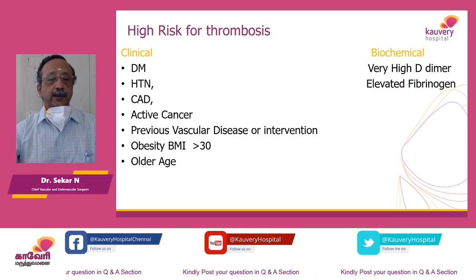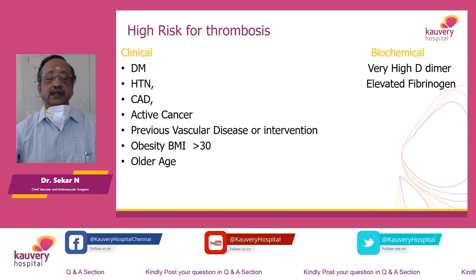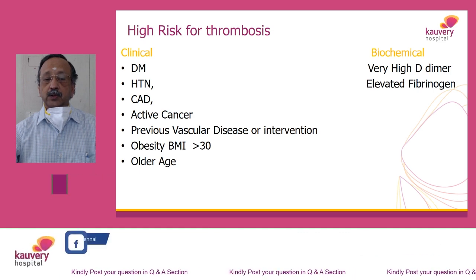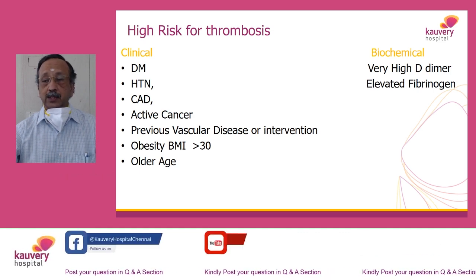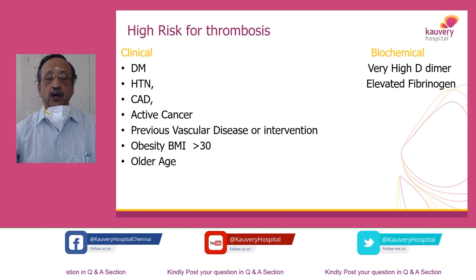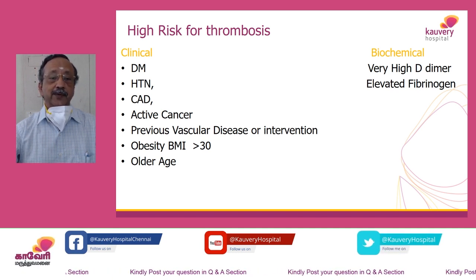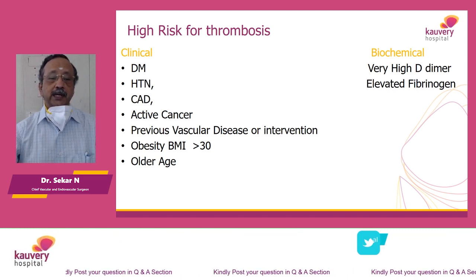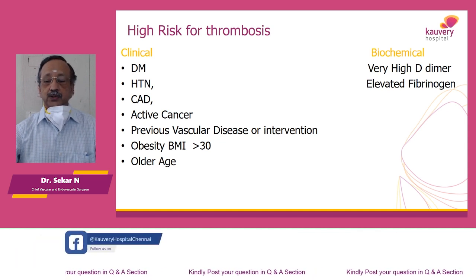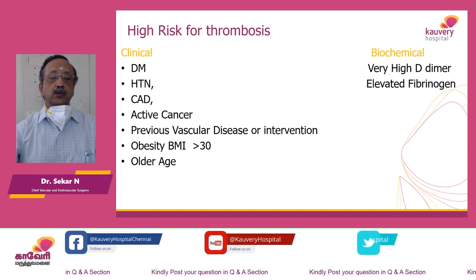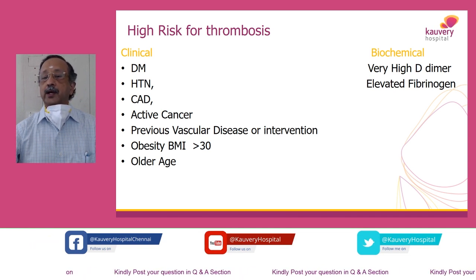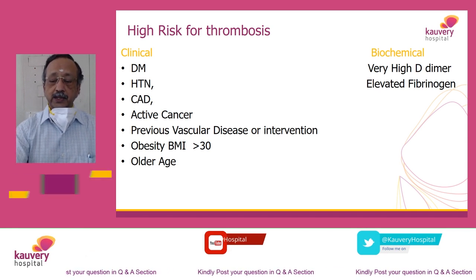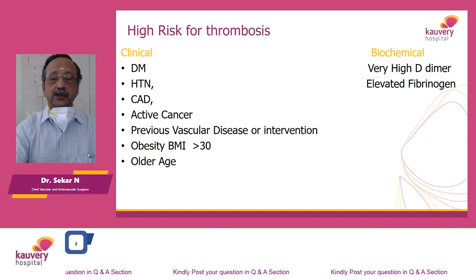Who are at risk for thrombosis? Diabetic people, hypertensives, those with coronary artery disease, those with active cancer, previous vascular disease or intervention, obesity with BMI more than 30. Young people who are obese are developing thrombosis without any other comorbid conditions. Older age and renal failure — many patients on dialysis are really prone to develop this COVID disease. The biochemical markers are very high D-dimer and elevated fibrinogen, which should alert us that this patient may end up with a thrombotic event and we have to take appropriate measures.